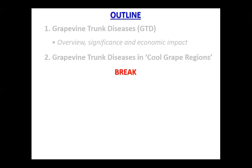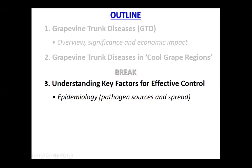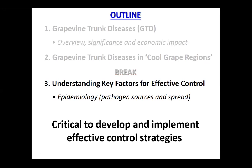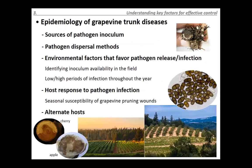Moving on to what I think is very important and critical: understanding the key factors for developing an effective control. It's essential to understand how the disease works — how the pathogen exists in our environment, where the source of inoculum comes from, and how it is spread. This information will guide us in developing our best management strategies.